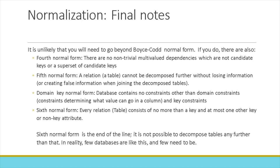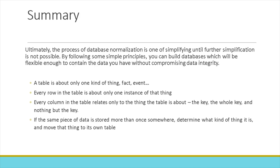In summary, the process of database normalization is one of simplifying until further simplification is not possible. By following some simple principles, you can build databases which will be flexible enough to contain the data you have without compromising data integrity. A table is about only one kind of thing — a fact, an event. Every row in the table is about only one instance of that thing. Every column in the table relates only to the thing the table is about: the key, the whole key, and nothing but the key. If the same piece of data is stored more than once somewhere, determine what kind of thing that data describes and move that thing to its own table.